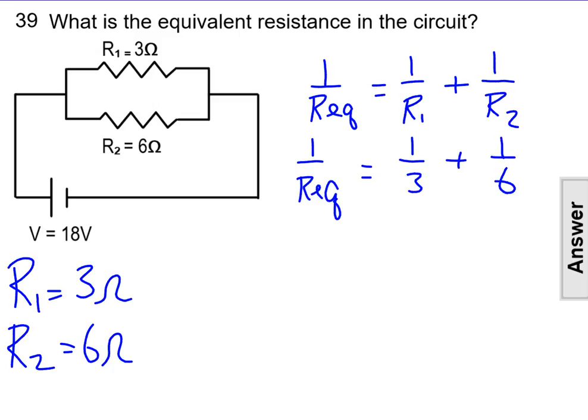In order to add these two fractions together, we need to have them have a common denominator. So the common denominator for this set of fractions would be 6. And in order to get that common denominator, I need to multiply the fraction 1 over 3 by 2 over 2.